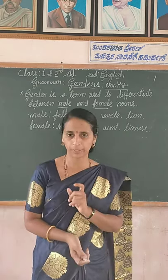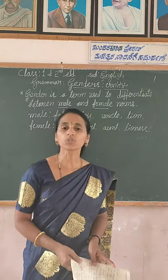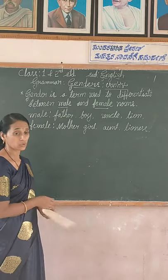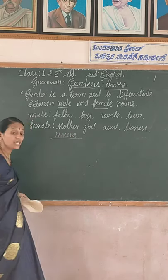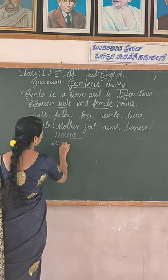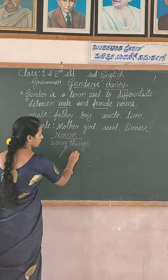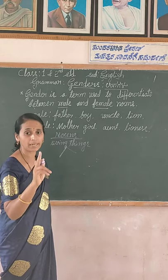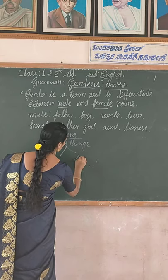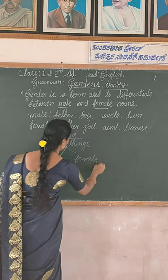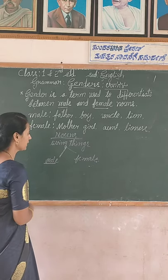Okay students, we also take nouns. In nouns, living things — we take nouns. Nouns, N-O-U-N-S, means living things, L-I-V-I-N-G T-H-I-N-G-S. Living things we divide into two parts: male and female. Male means masculine gender. Female means feminine gender.